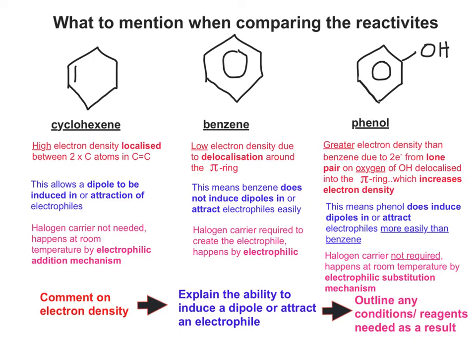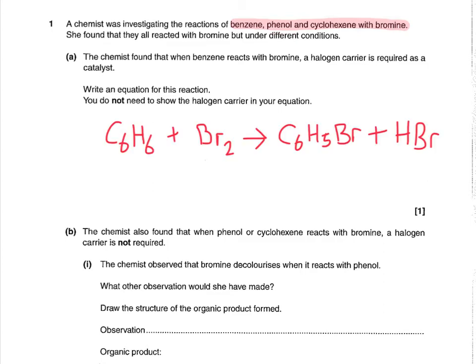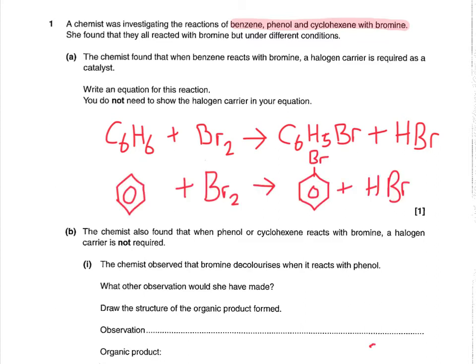The first thing you do is comment on the electron density. Then you explain the ability to induce a dipole or attract an electrophile, before outlining any conditions or reagents needed as a result of this. The next thing to do is look at an exam question. This particular question talks about the reactions of benzene, phenol, and cyclohexene with bromine. The chemist found that benzene reacts with bromine requiring a halogen carrier as a catalyst, and they want an equation for this reaction — just one mark, and you don't need to show the halogen carrier. You can use the displayed or skeletal formula if you wish.